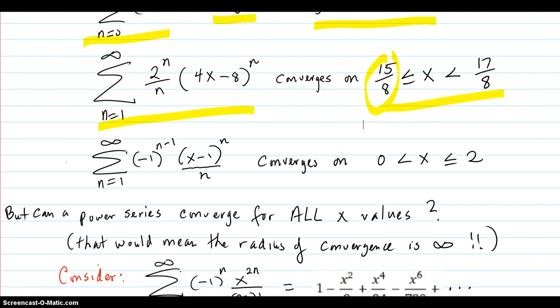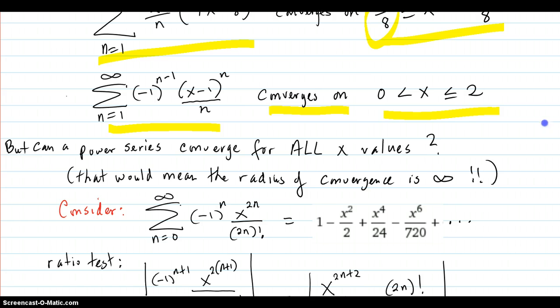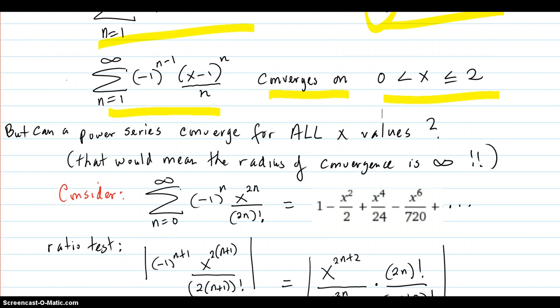And another example in the videos was this series, power series, and it converged on this interval which included the right endpoint, but did not include the left. So we saw that type of example.